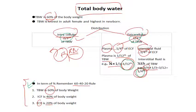Remember that total body water is lowest in adult females — specifically, if a female is obese, she will have a lot of fat, and with more fat there will be lower water content. In contrast, newborns have a very high water content in their bodies.